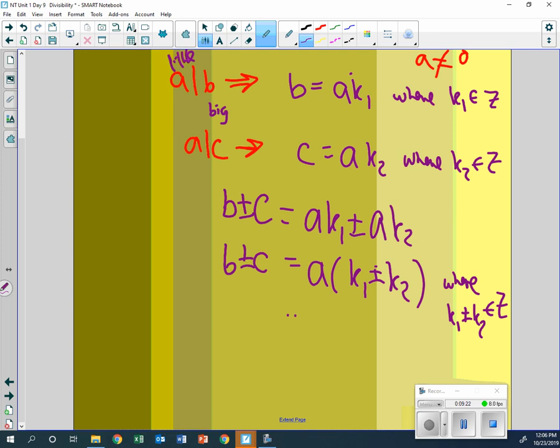So now, if b plus or minus c is equal to a times k1 plus k2, which is the smaller of these two? A or b plus or minus c? This is small, and this is large. So then, we can finally say that a divides b plus or minus c.